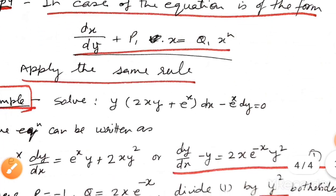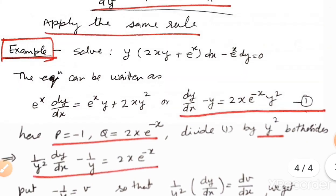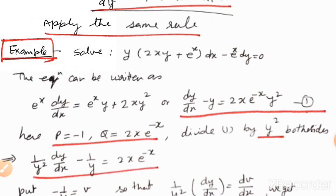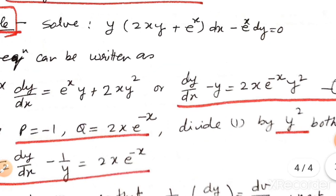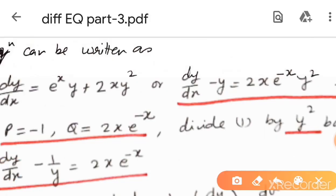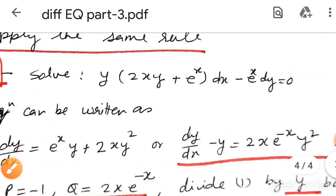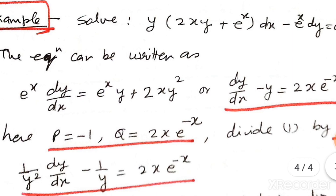Now a numerical example taken from an exam paper: y minus 2xy plus e to the power x dx minus e to the power x dy. This equation can be written in this form.